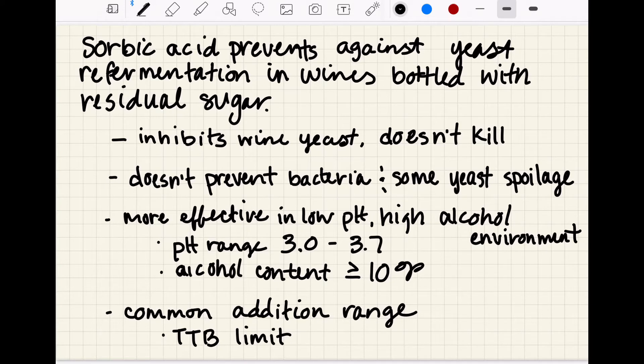Something else to keep in mind is that there's a common addition range. There's no chart that tells you exactly based on your pH and alcohol content what you should add, so you have a little bit of flexibility and you need to decide that sorbic acid addition rate. But a range that you can use as a rule of thumb is 150 to 250 milligrams per liter sorbic acid.